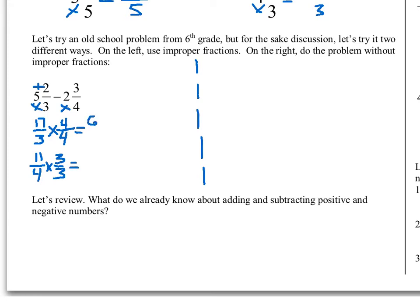So we end up getting 68 over 12, and we're subtracting 33 over 12. We get 68 minus 33, which is 35 over 12. If we change that to a mixed number — which you don't have to — that's 2 and 11-twelfths. No big deal. Nothing wrong here. This is exactly the way Ms. Wilcox taught you to do it.